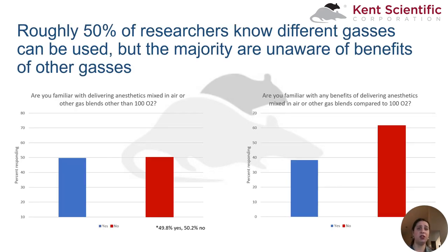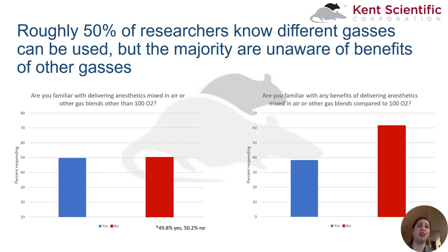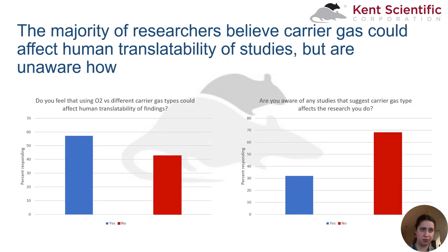We wanted to get a feel of what researchers already knew about different carrier gases, so we conducted a survey to get a baseline view. Although about half of all researchers surveyed knew you could use gas blends other than 100% oxygen, most were not clear if there were any off-target effects from using different oxygen percentages during surgery, or explicit benefits of using different oxygen percentages. Furthermore, although the majority of researchers surveyed did feel that using 100% oxygen could affect translatability studies, they were not aware of any studies that suggested risks, benefits, or other impacts on their research.